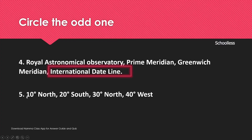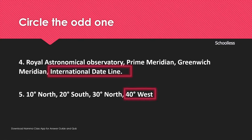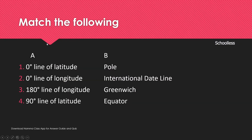Next: 10 degrees North, 20 degrees South, 30 degrees North, 40 degrees West — the first three are latitudinal reference points (North/South) while 40 degrees West is a longitudinal reference point, so 40 degrees West is the odd one. Match the following: zero degree line of latitude is the Equator.